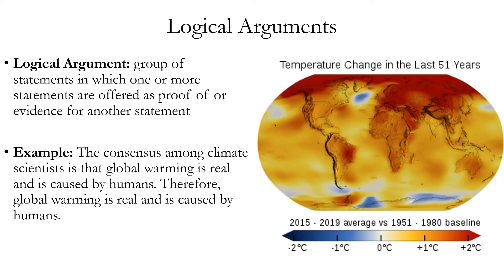Let's look at the concept of a logical argument. A logical argument is a group of statements in which one or more statements are offered as proof of or evidence for another. Not every statement or type of language includes logical arguments — only if some statements are offered as proof of another. Here's an example: 'The consensus among climate scientists is that global warming is real and is caused by humans. Therefore, global warming is real and is caused by humans.' This uses the first statement as a premise to prove the second statement, which is the conclusion of the argument.